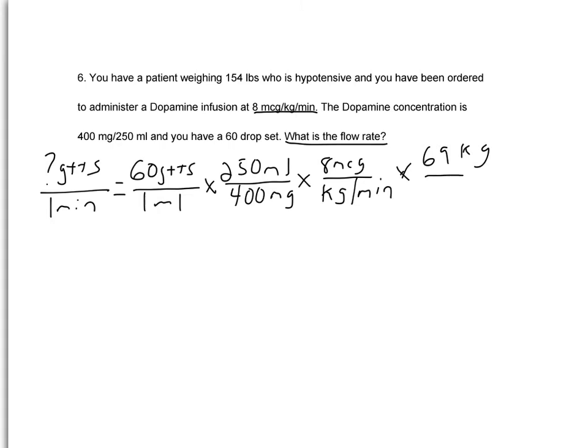And we'll make that over 1, just so we know it's a numerator and a denominator. Next, we need a conversion formula. Because our concentration is in milligrams, but our dose, ordered dose, is in micrograms. So since we have micrograms on top, milligrams on the bottom, we're going to put 1 milligram on top equals 1,000 micrograms on the bottom.